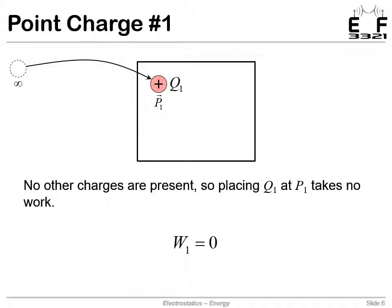First we'll start with an empty region and bring in our first charge. It'll be way out at infinity, and we bring it in and place the first charge at position P1 with charge Q1. Right now there are no other charges to create fields to pull or push on that charge, so the work it takes to move this charge into place is zero.